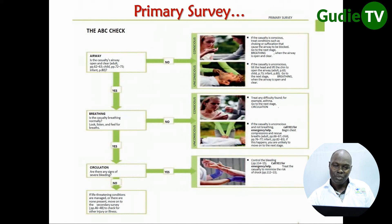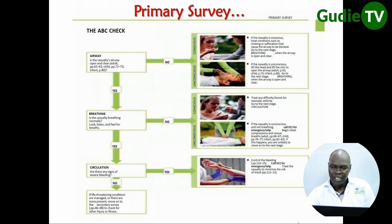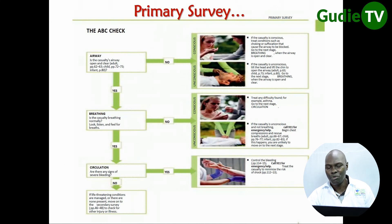Airway — is the casualty's airway open and clear? Make sure that you open the mouth and see that there are no stones, no grass, and nothing in the mouth of the casualty. If yes, then check the breathing. If no, remove them. If the casualty cannot talk to you, it could be suffocation or choking, causing the airway to be blocked. In such circumstances, intervene — open the airway and help the person immediately.